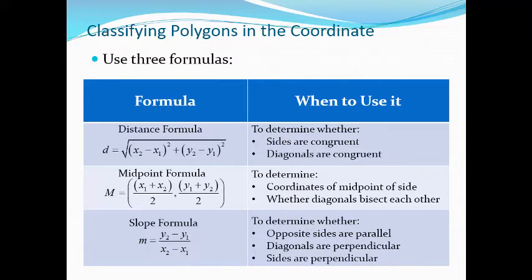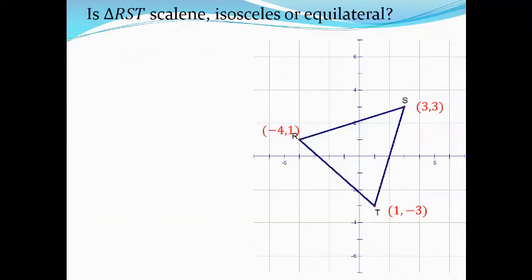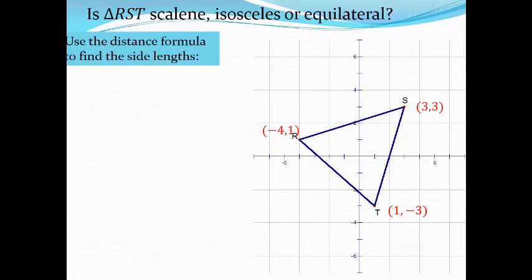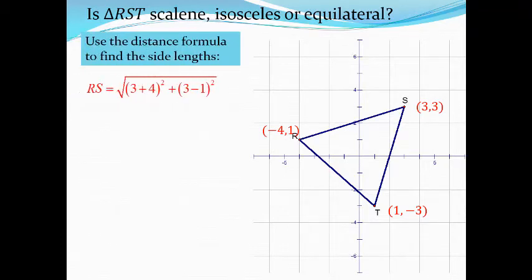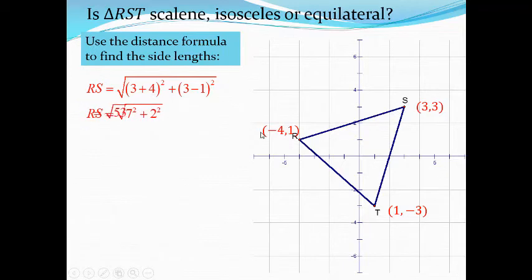Let's check if the given triangle RST is scalene, isosceles, or equilateral. To check this, we need to find the length of each side. Using the distance formula, the length of side RS equals the square root of (3 minus negative 4) squared plus (3 minus 1) squared, which equals the square root of 53, or about 7.28.